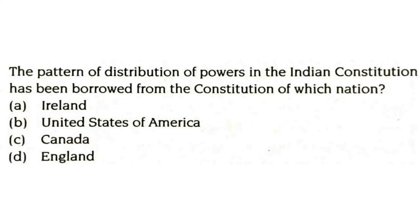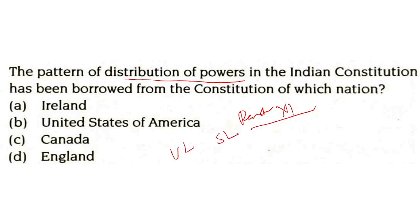The pattern of distribution of powers in the Indian constitution has been borrowed from the constitution of which nation? This is covered under Part 11, Articles 245 to 263. The structure of having powers divided into three lists — union list, state list, and the concurrent list — this feature has been brought from the constitution of Canada.